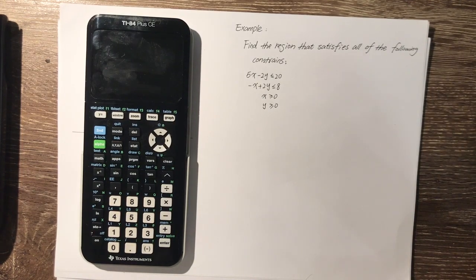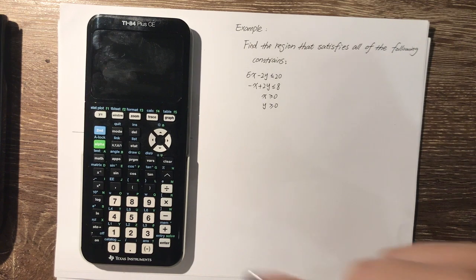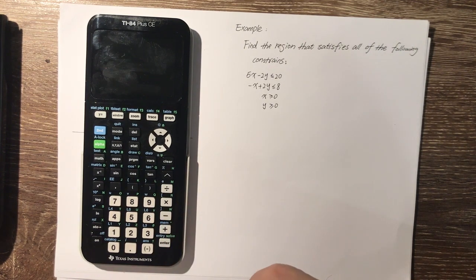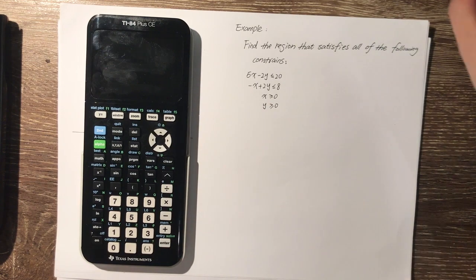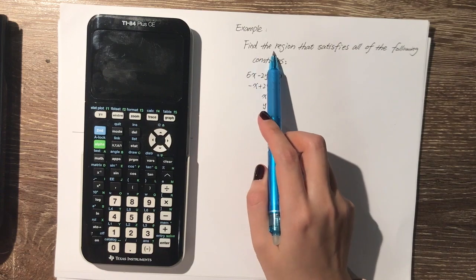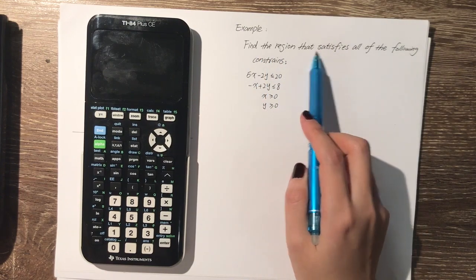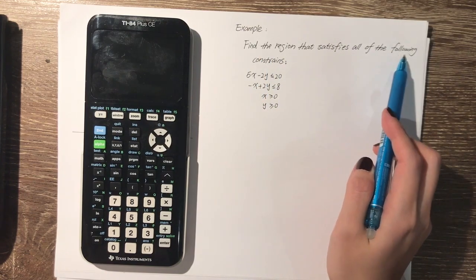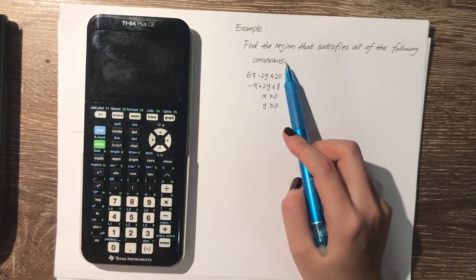This video will show you how to use a TI-84 calculator to graph inequalities and find the feasible region. The example question is: find the region that satisfies all of the following constraints.